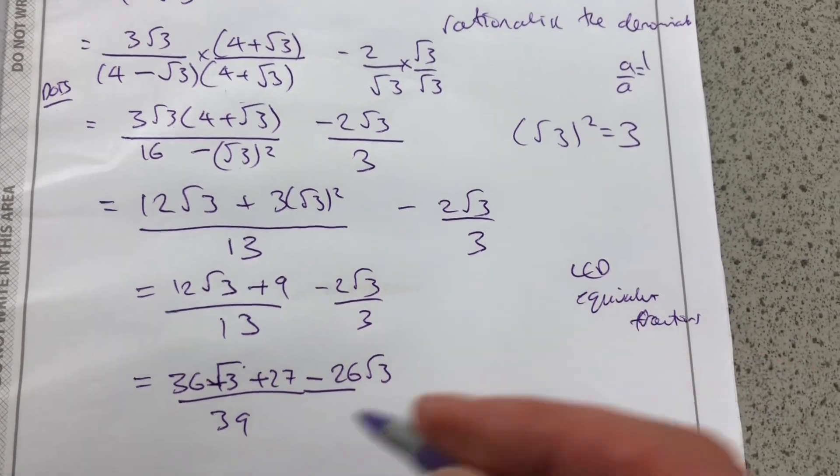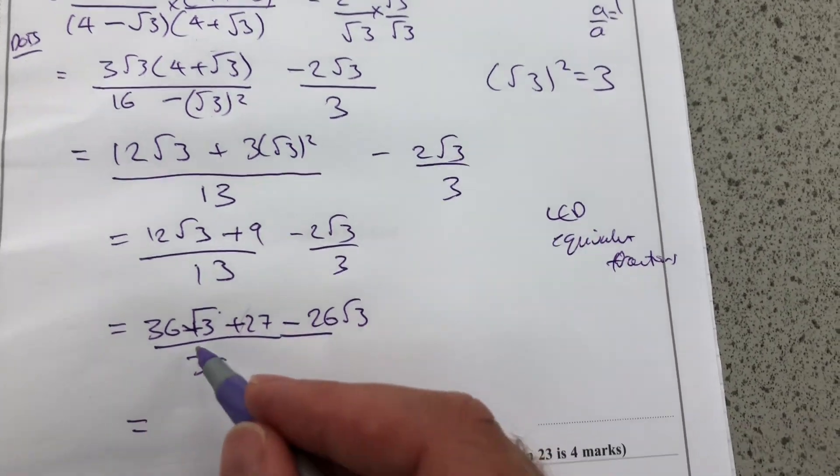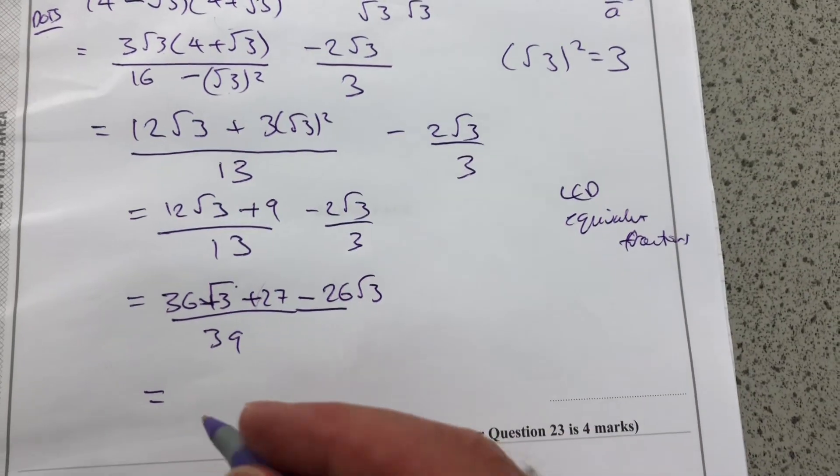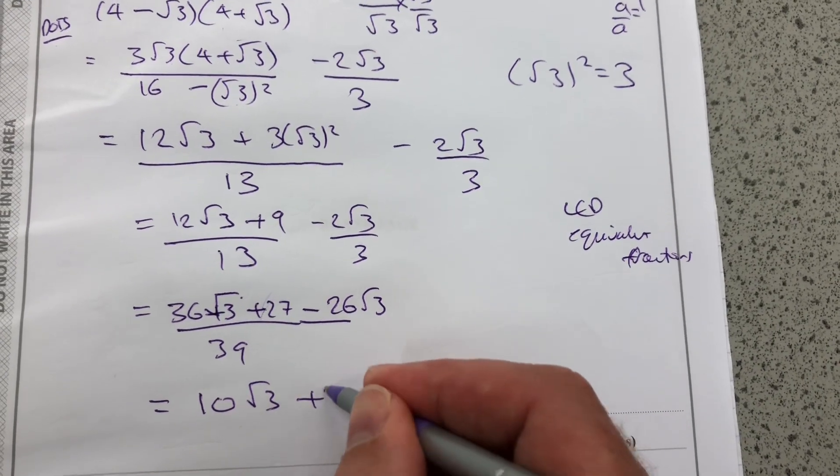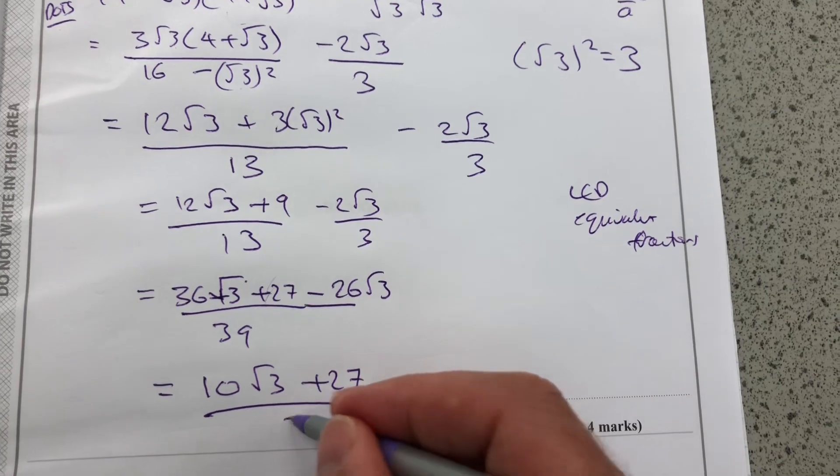26 root 3. That 27 is going to stay the same. But 36 minus 26 is going to be 10 root 3 plus 27 all over 39.